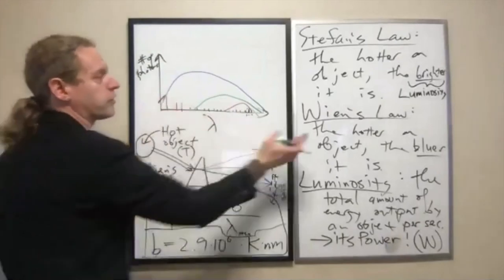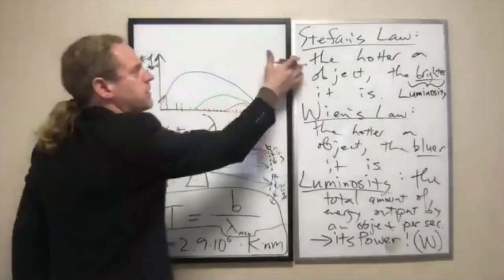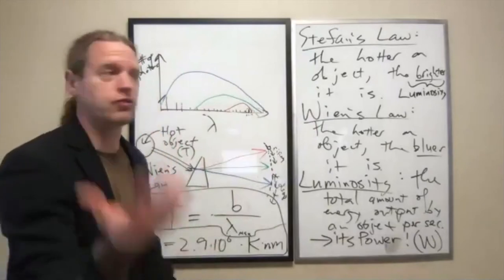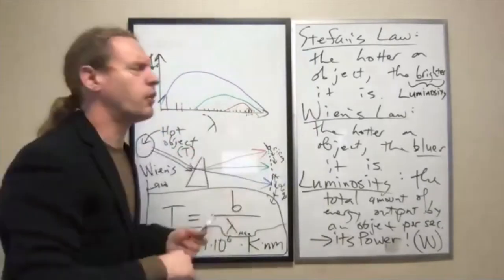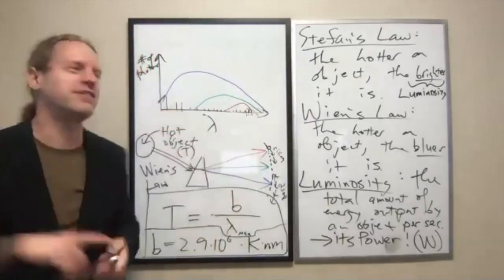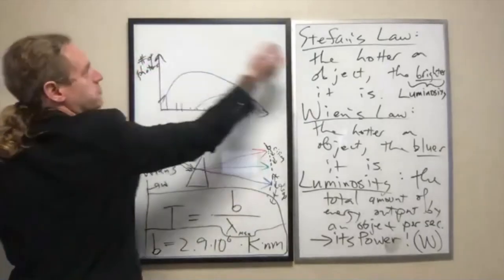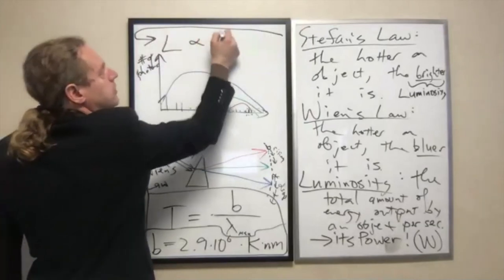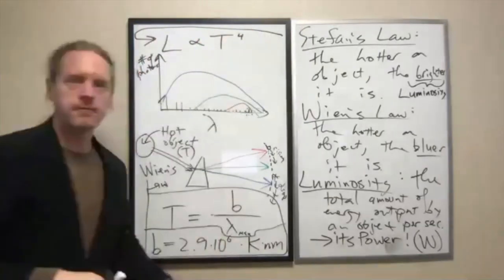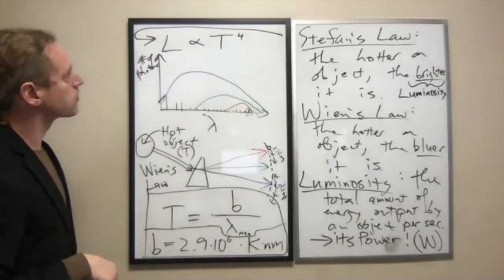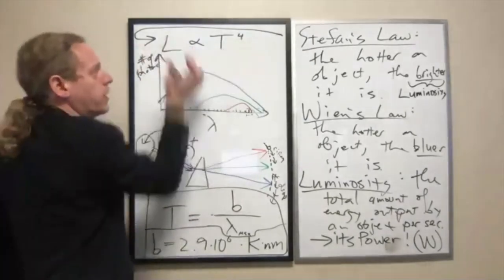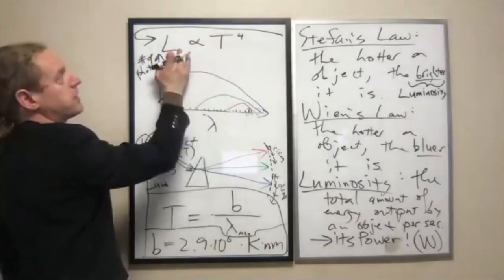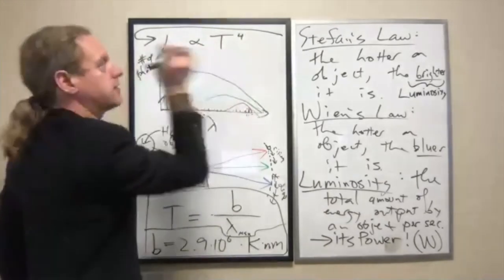So that energy or the power of an object, as predicted by Stefan's law, is dependent on T to the fourth. So if you double the temperature of a star, you 16 times its output. So Stefan's law specifically says that the luminosity is proportional to T to the fourth. And so again, this is where we come up with the idea that when you multiply T by a factor, the luminosity is multiplied by a factor to the four: two to the four is eight, sixteen.